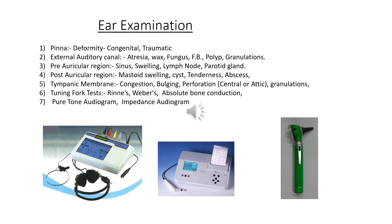Since we cannot go inside the tympanic membrane, we examine hearing through tuning fork tests: Rinne's test for air conduction, Weber's test for bone conduction, and absolute bone conduction as a comparison between the hearing of the patient and the doctor. For specific hearing sensitivity recording, we go for pure tone audiogram. This completes the overall clinical examination of the ear.